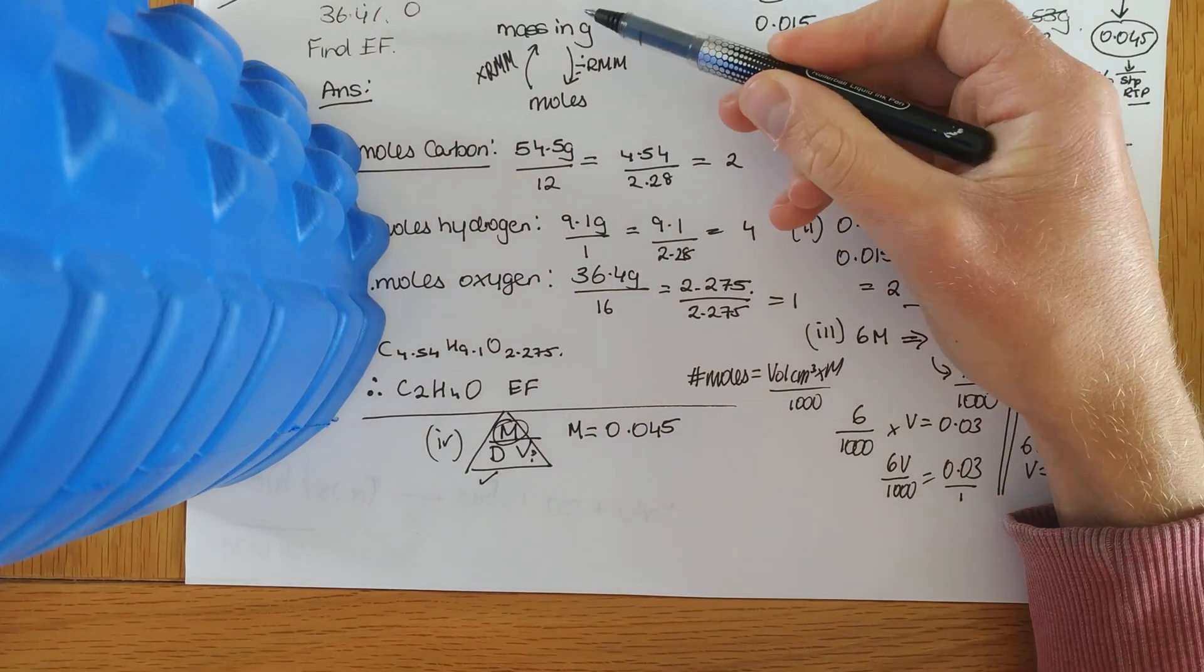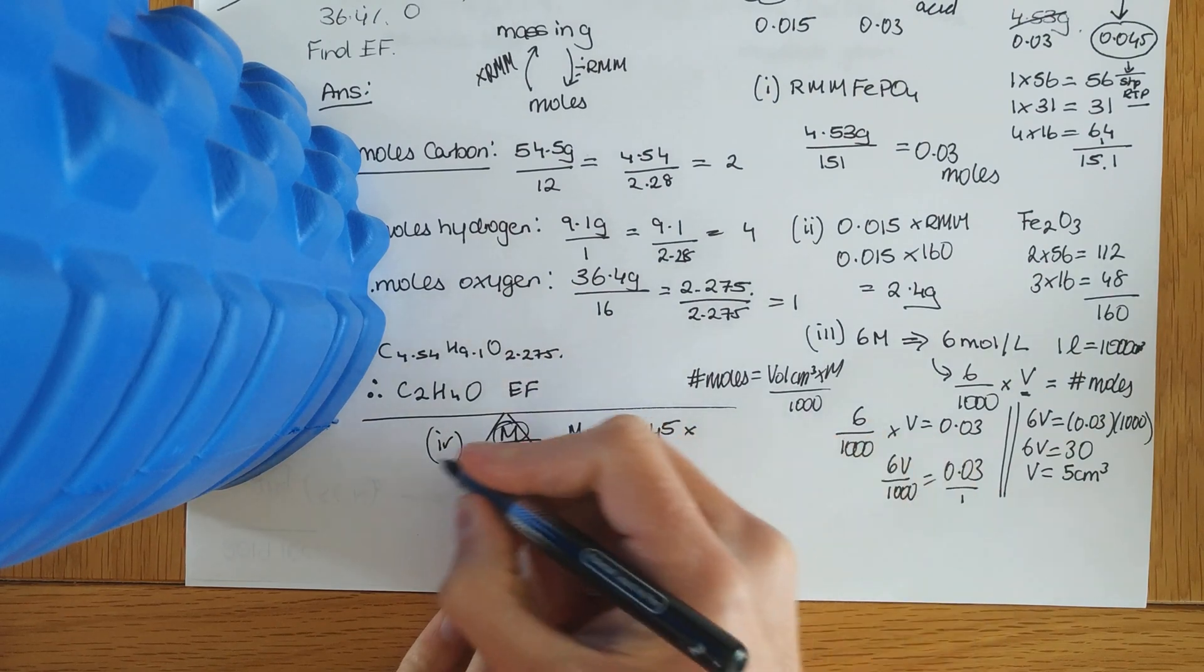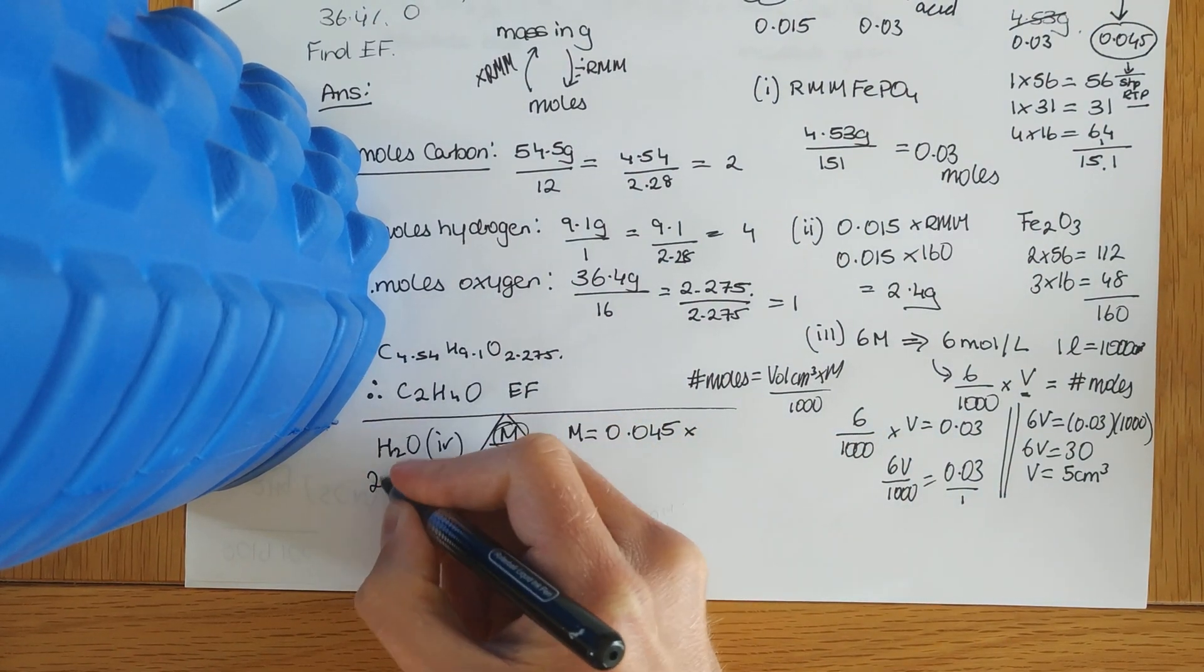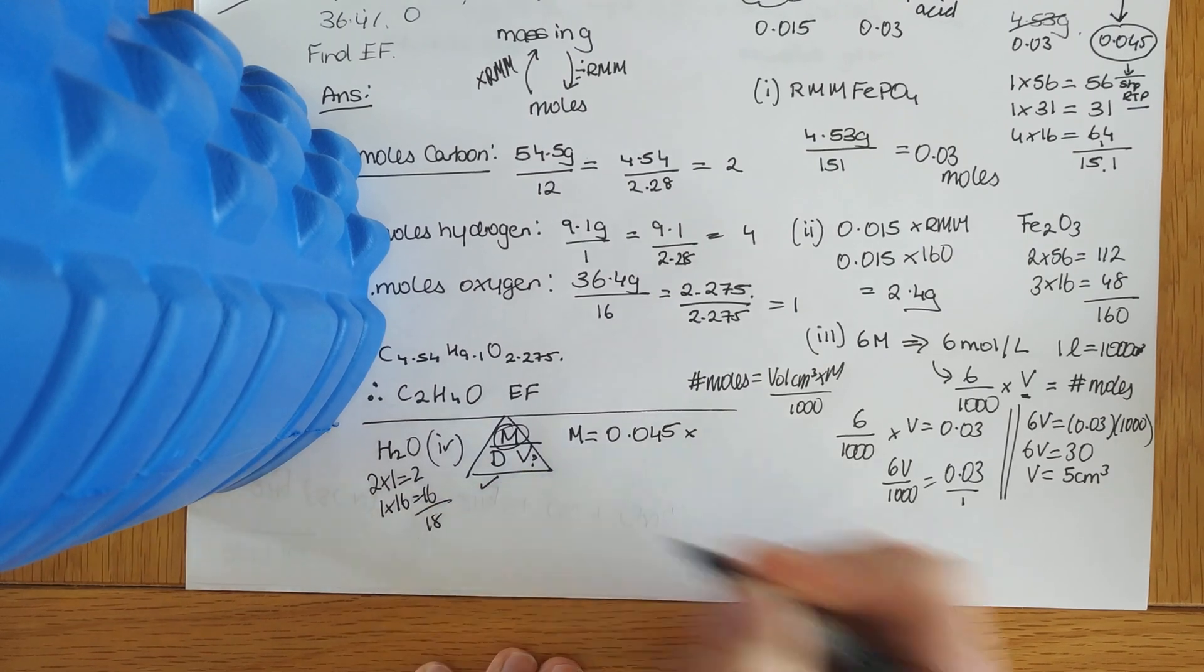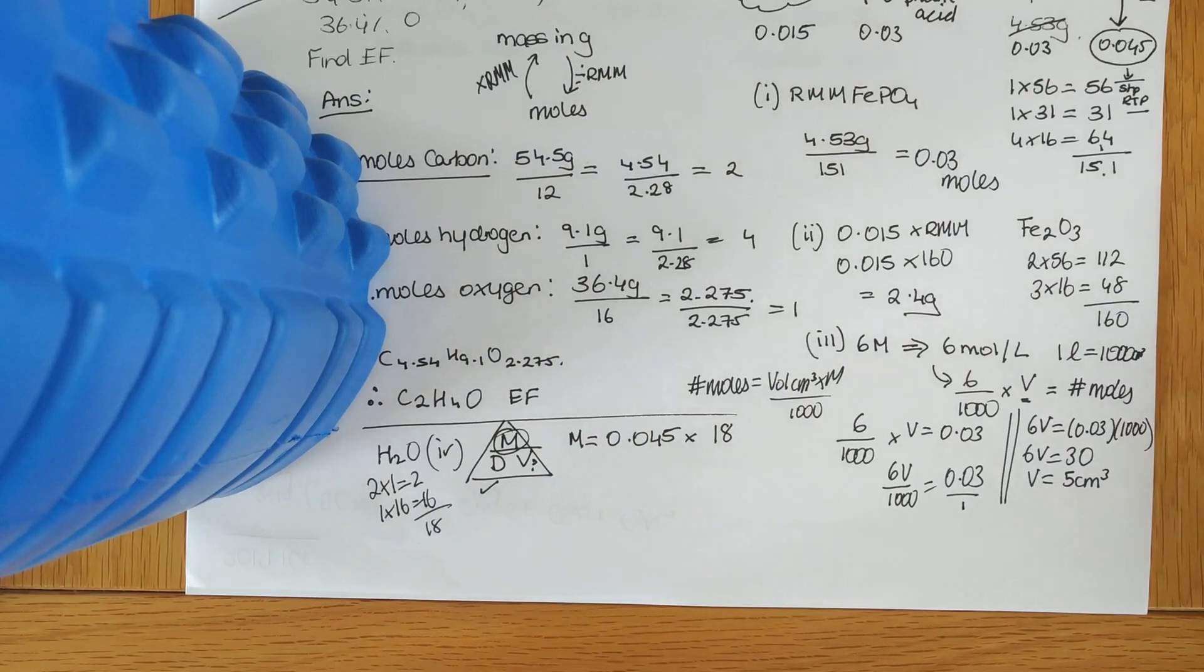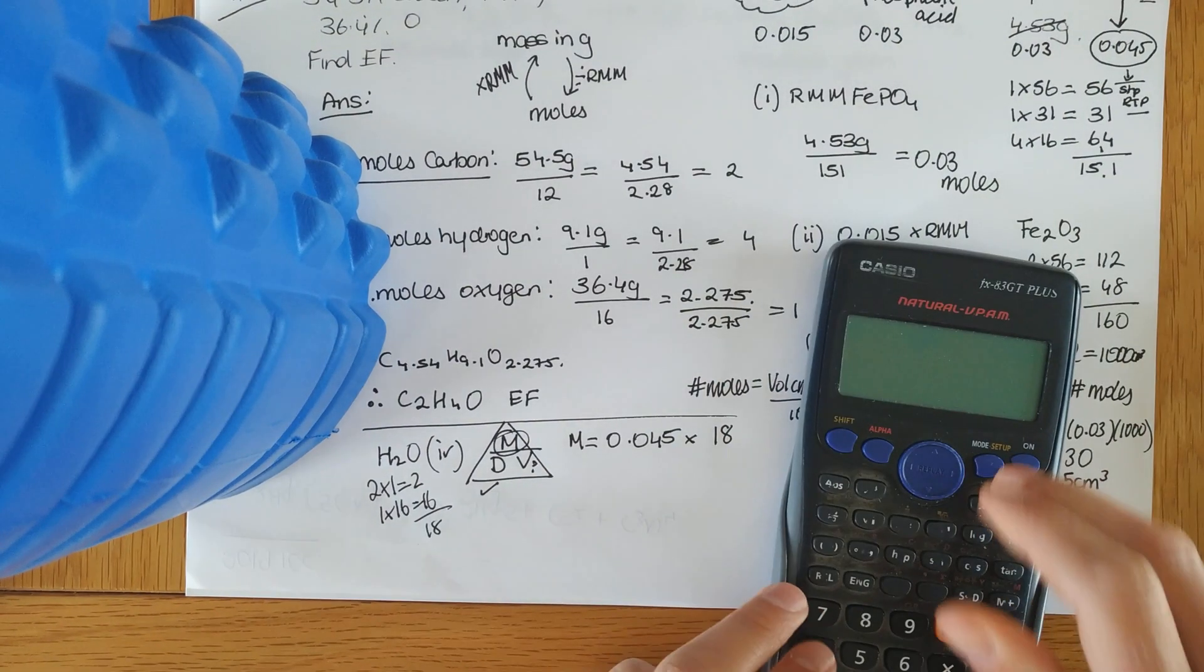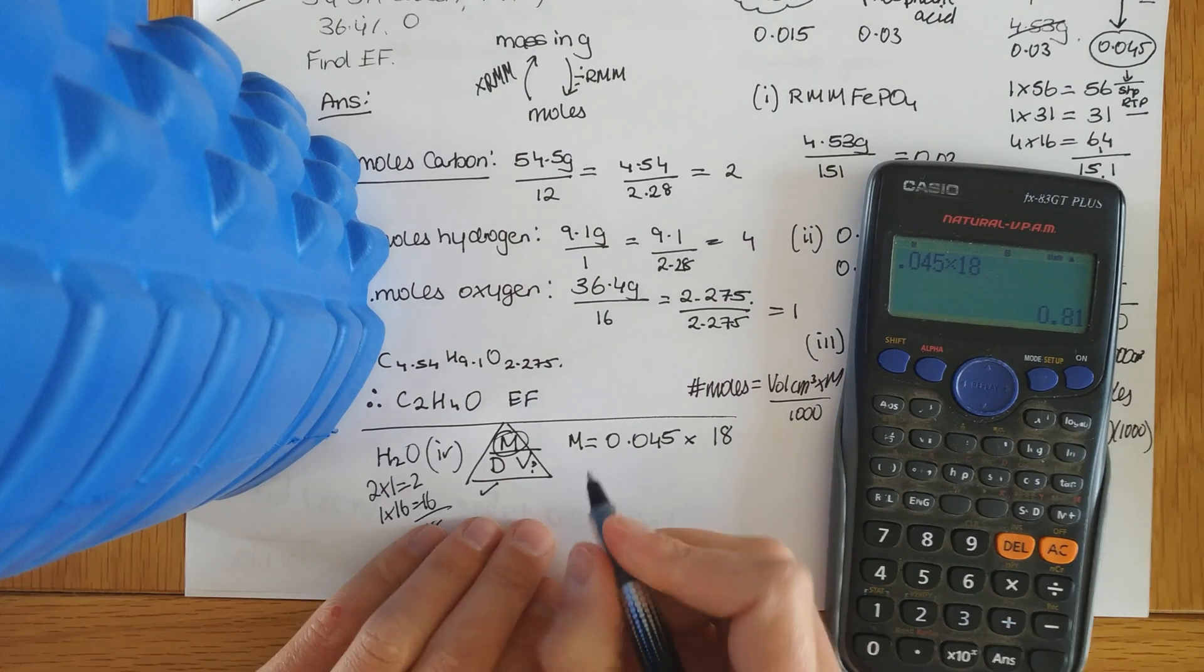And to go from moles to mass in grams, I'm multiplying by the relative molecular mass. And the relative molecular mass of water, 2 by 1, 1 by 16, 18. So, 0.045, 18 gets me 0.81 grams.